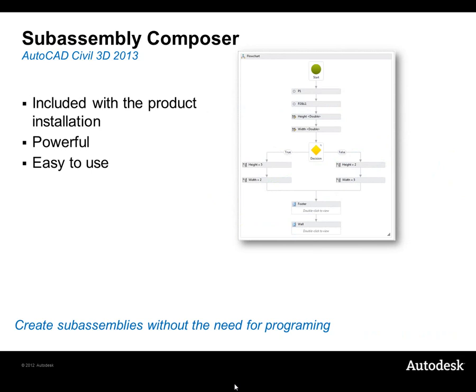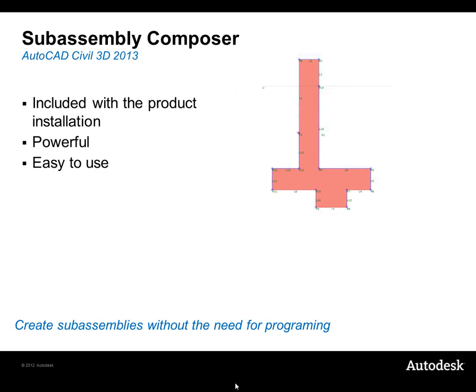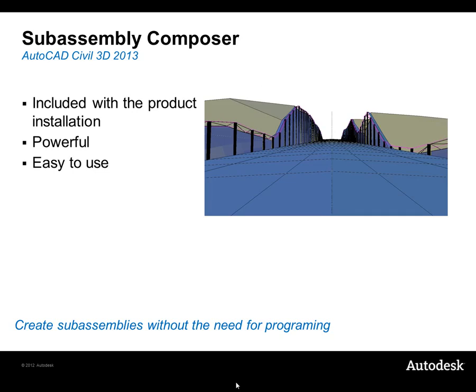When it comes to corridor modeling, Civil 3D ships with a large amount of content. If you need to create new content — maybe to represent a retaining wall, a special curb, or another structure — one of the former extension tools now shipping with Civil 3D 2013 is the subassembly composer. Through it, you can easily create not only the representation of the object but also include parameters to control retaining wall height or width based on your design. For example, here the retaining wall is adjusting its height consistent with the ground surface.